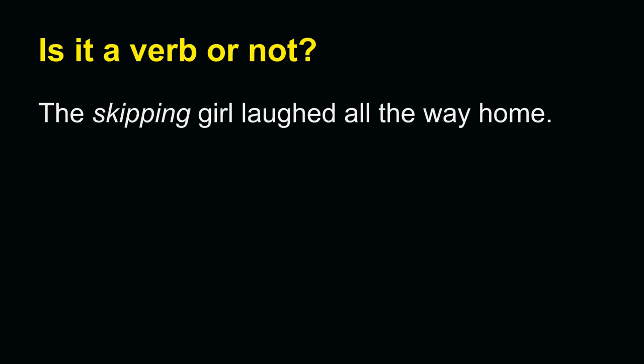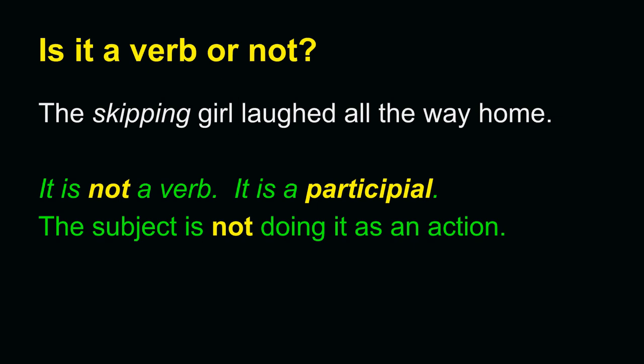Let's look at this sentence. The skipping girl laughed all the way home. It is not a verb. This is a participial. A participial is a present or past participle that is being used for something other than verb purposes. In this case, the word skipping is modifying girl. The subject is not doing it as an action. In this sentence, the subject, the girl, is laughing. That is her action and that is the verb.